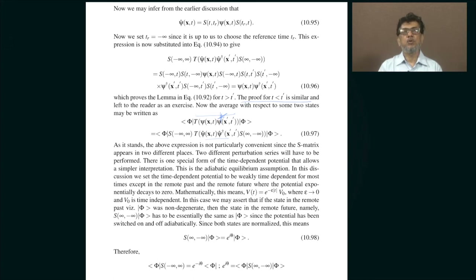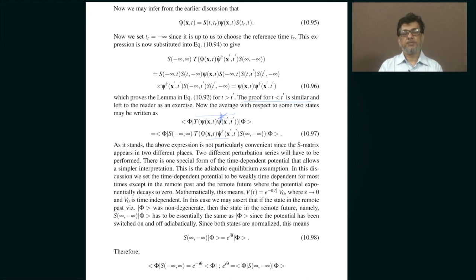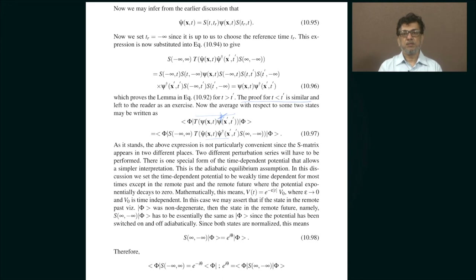The state of the system is such that in the remote past the system had a well-defined energy. After all, there is no question of temperature — this is a non-equilibrium problem — so it is not logically wrong to postulate that the system had a well-defined energy in the distant past. I am going to assume that energy is non-degenerate, meaning there is exactly one state corresponding to that energy. If I switch on a perturbation very slowly there is every reason to expect the state will evolve smoothly.